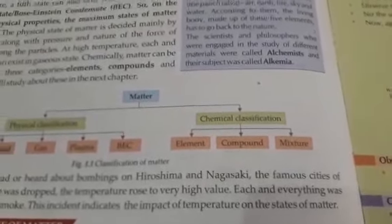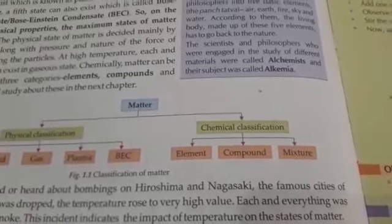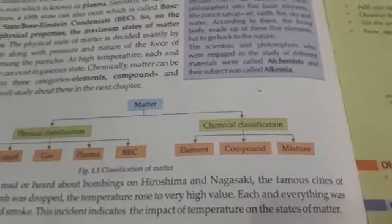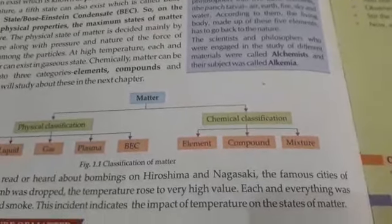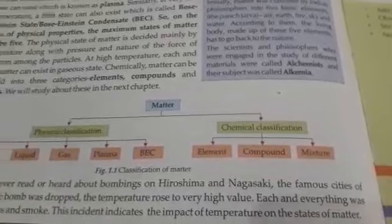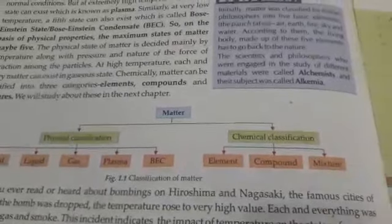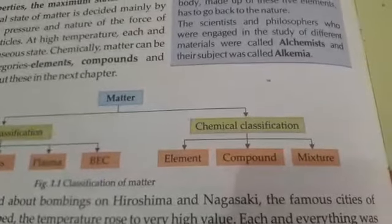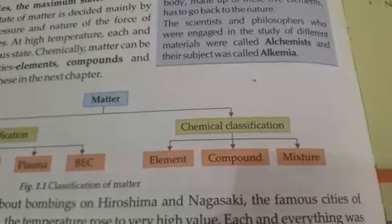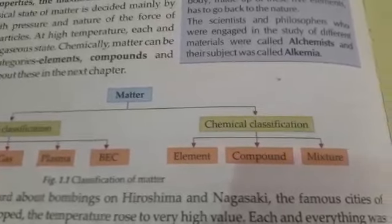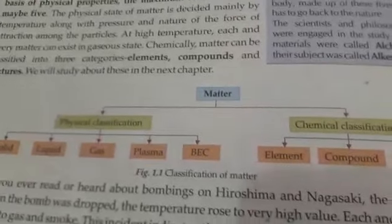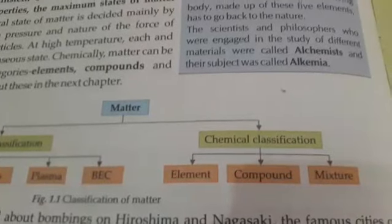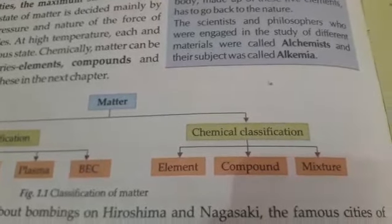For chemical classification of matter, matter is classified into three types: element, compound, and mixture. An element is made up of the same kind of atoms; a compound is composed of two or more elements; and a mixture is made up of two or more elements but not in a fixed ratio. So chemically, matter is classified into three types: element, compound, and mixture.